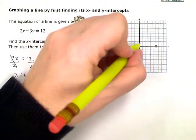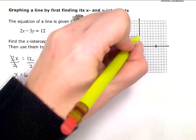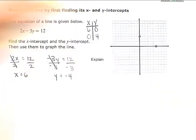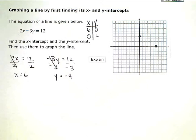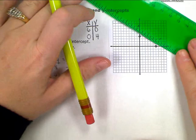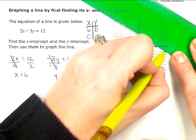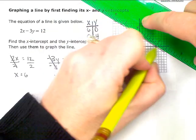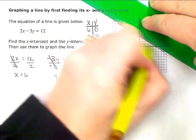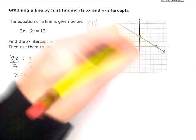Once you have those two points, you can line them up and draw in your graph.